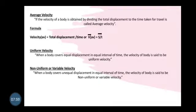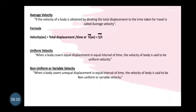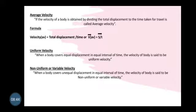Average velocity: if the velocity of a body is obtained by dividing the total displacement by the time taken for travel, it is called average velocity. The formula is: V_average = total displacement upon time, written as V(av) = S/T. As mentioned earlier, we denote vector quantities with arrowheads, so both velocity V and displacement S carry arrowheads here.